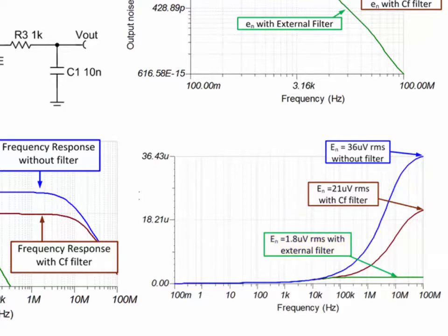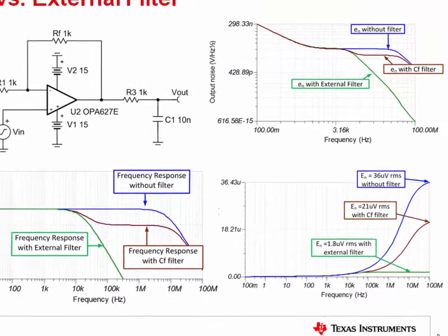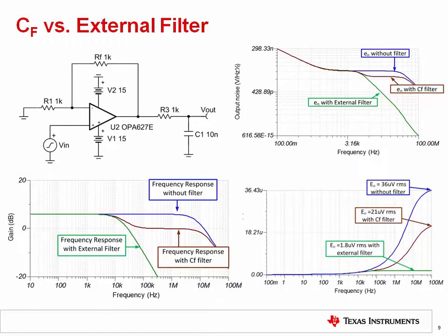The only disadvantage to using the external filter is that the output impedance is now high as compared to the op amp output. This is OK if the next stage has a high input impedance. However, there will be significant errors for low impedance loads.